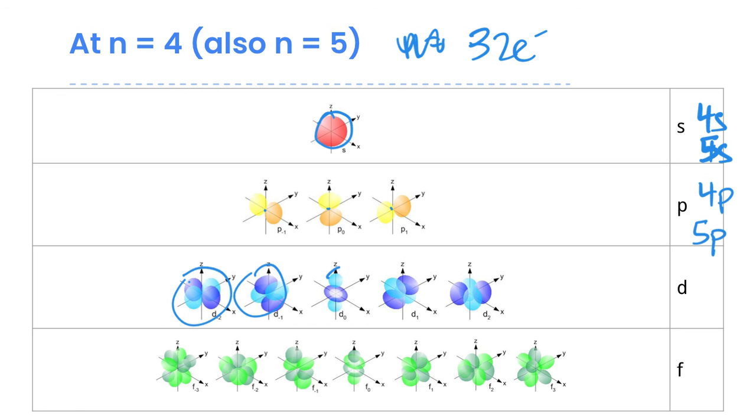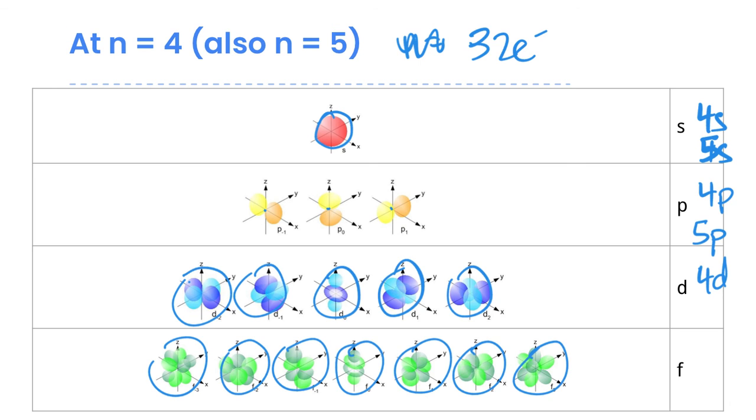And then the f is even more complex. You can see the shapes get weirder and weirder as we get further and further from the nucleus. There are seven different ones here, so this can fit up to 14 electrons in f's, and we refer to those as the 4f or the 5f. You don't need to know the shapes of either the d's or the f's, you only need to be able to describe shapes of s and p orbitals.